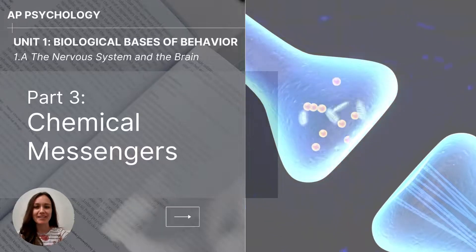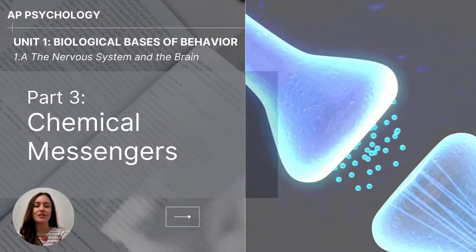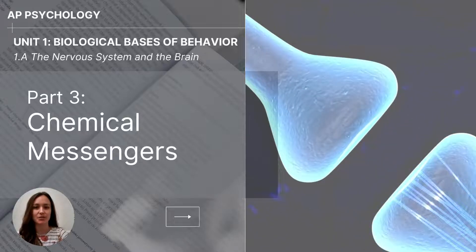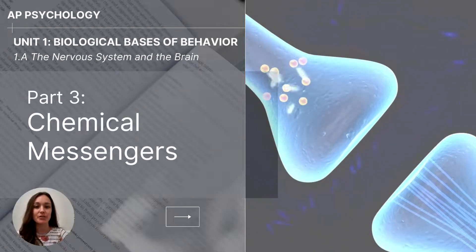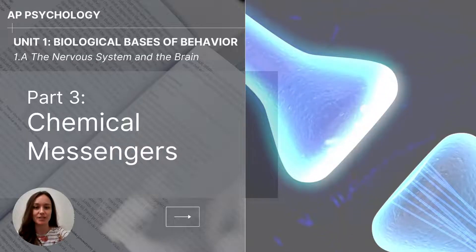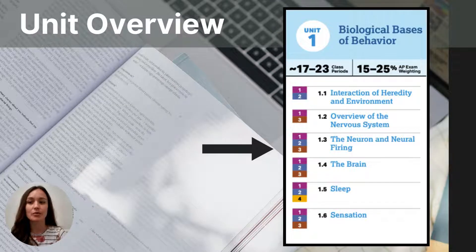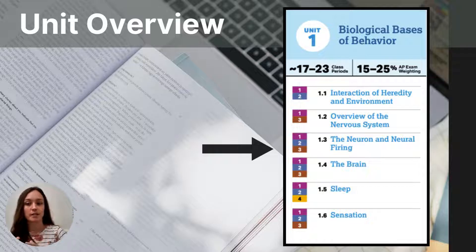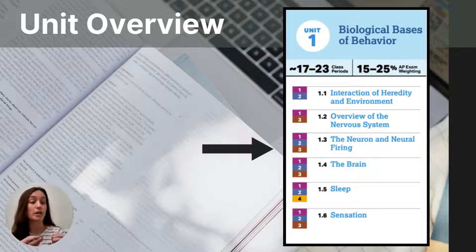Hi everyone, my name is Jolie McCreary and this video is part three of the unit one series, biological basis of behavior, for AP psychology students. This video will cover chemical messengers and the nervous system. This video will finish up the topic of the neuron and neural firing. In the previous video, part two, you went through an in-depth explanation of the electrical part of the neural transmission process. Today's video will focus specifically on the chemical component.